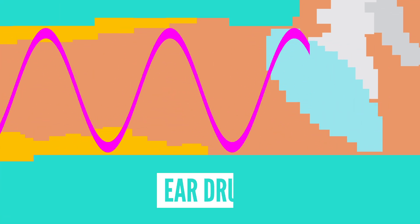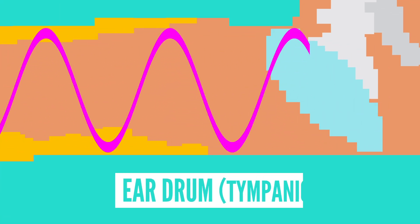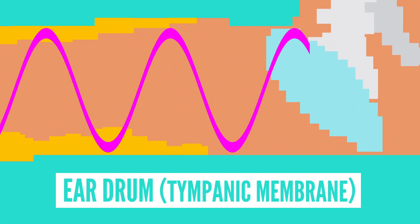Once the sound wave passes through the ear canal, it reaches your eardrum, or tympanic membrane. This transfers the wave's vibrations through the tiny bones called the ossicles, eventually reaching the inner ear.